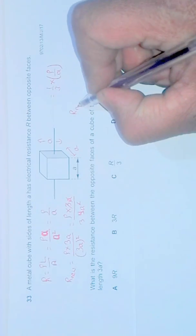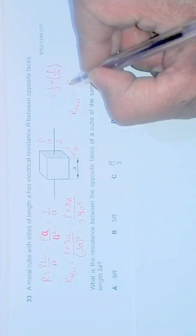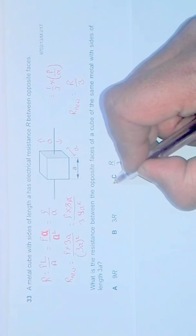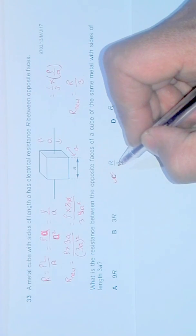R new should be equal to R by 3, which matches with choice C in the question. Thank you.